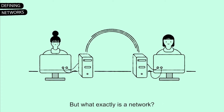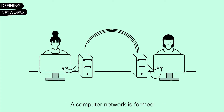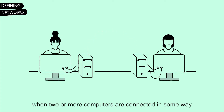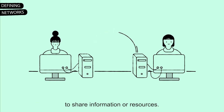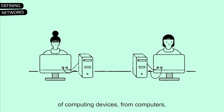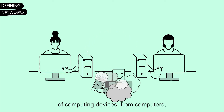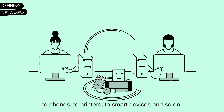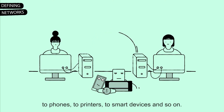But what exactly is a network? A computer network is formed when two or more computers are connected in some way to share information or resources. More broadly, a network is the interconnection of computing devices — from computers to phones to printers to smart devices and so on.